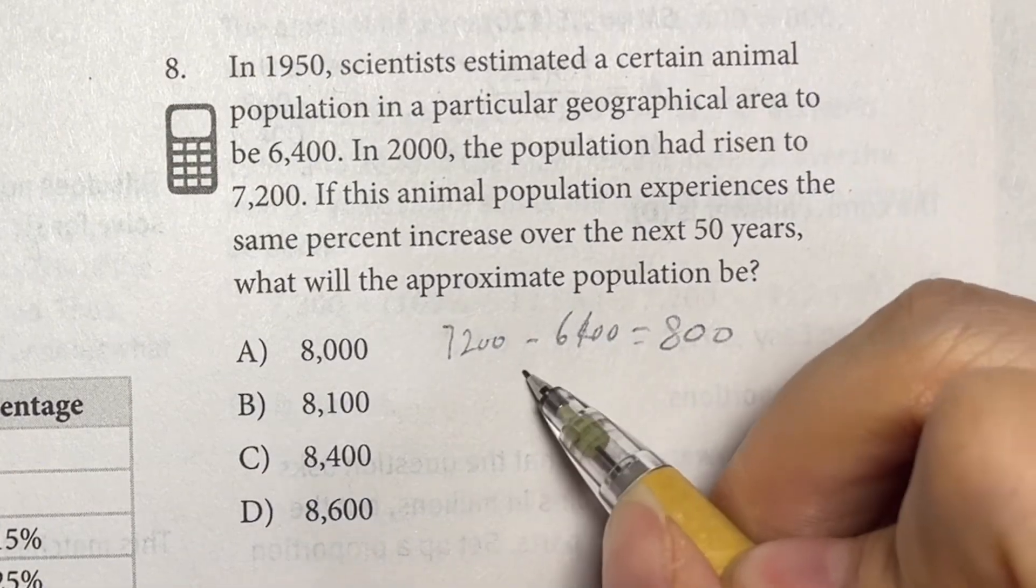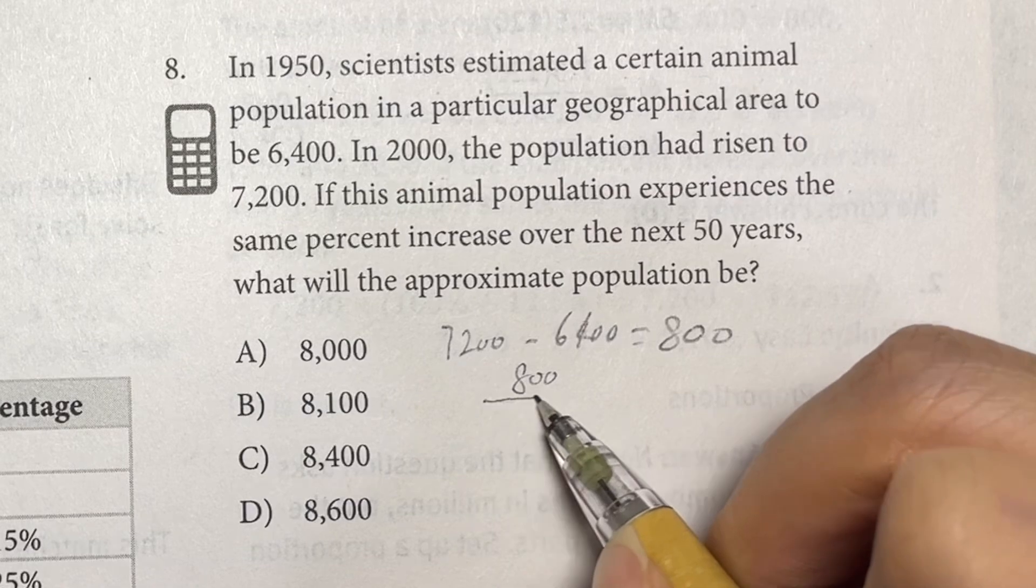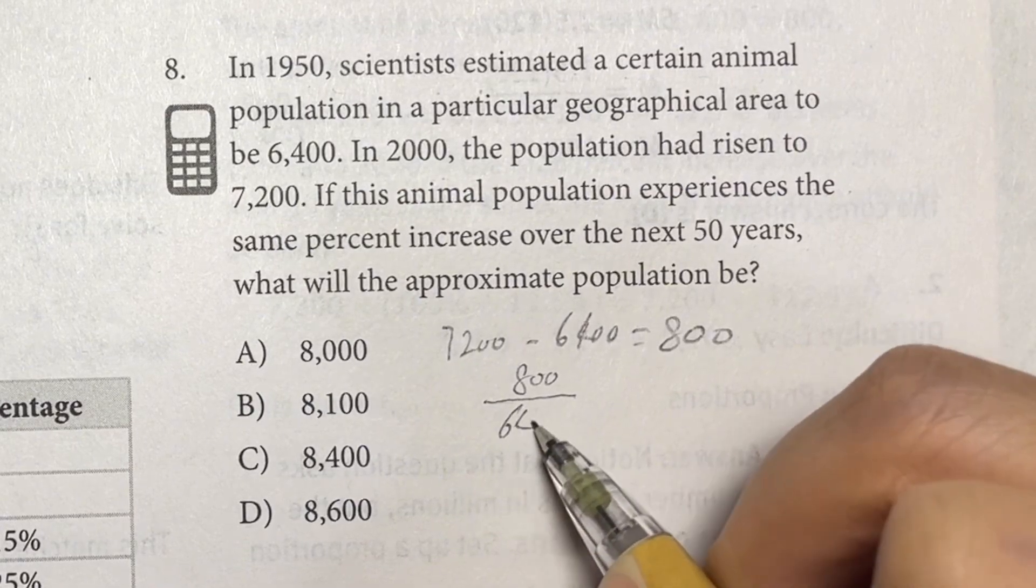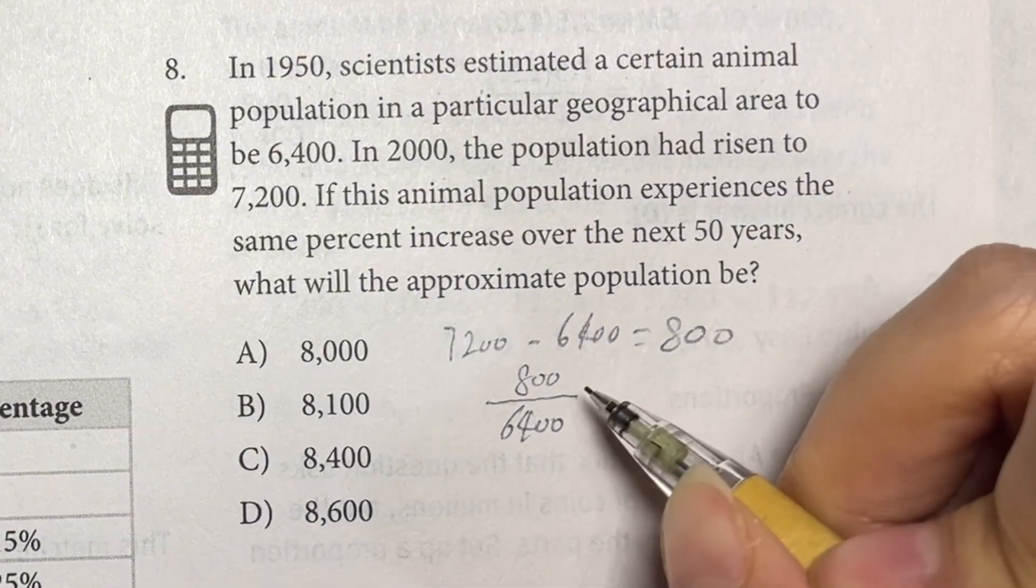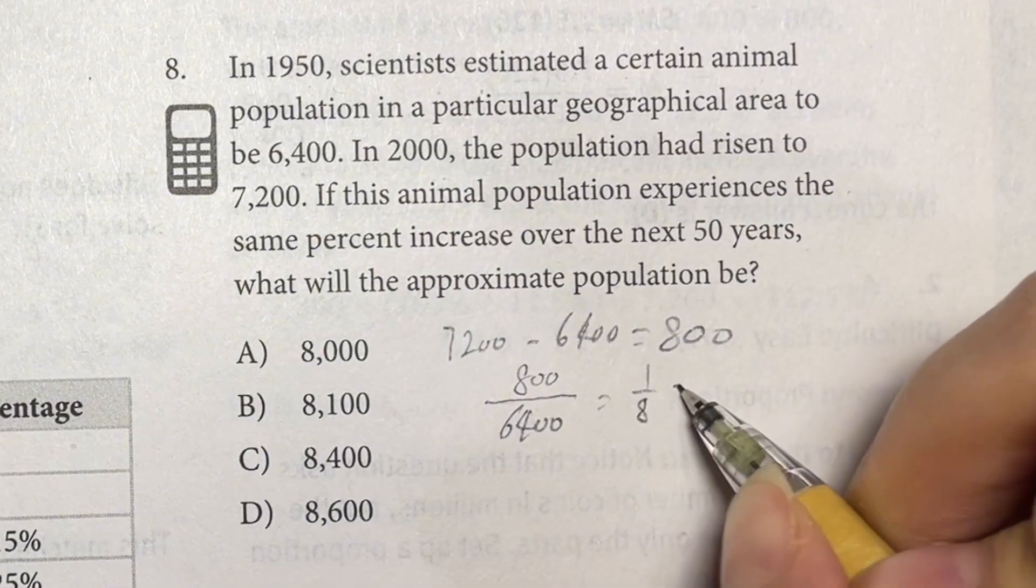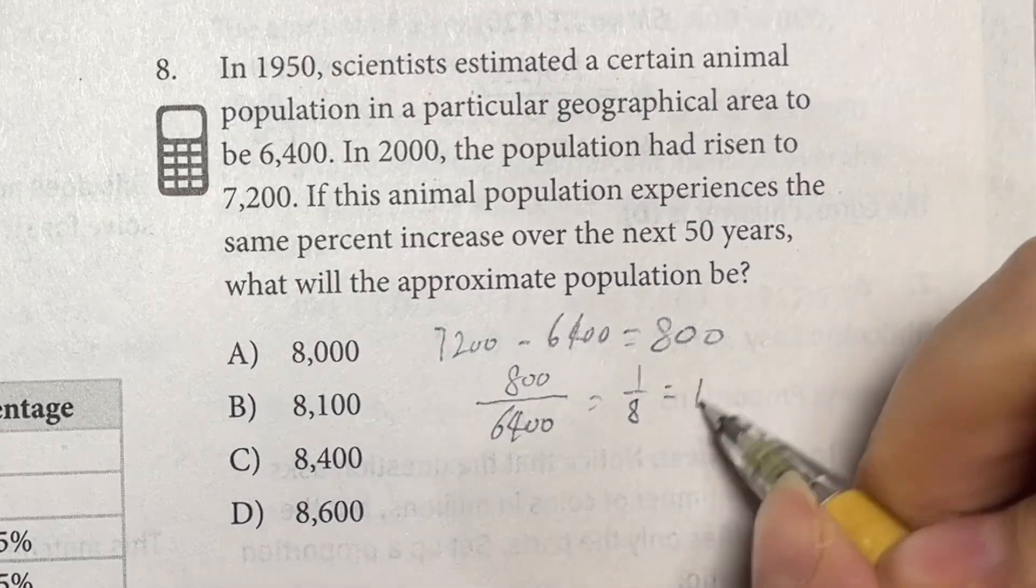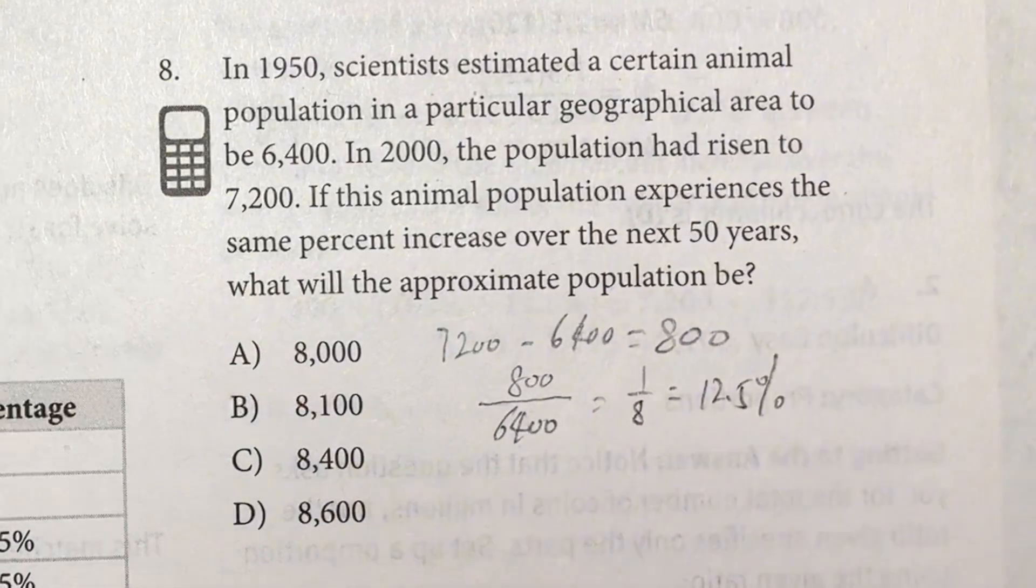Then we use this 800 divided by 6,400. That will be the ratio of increase. So it's 12.5 percent increased.